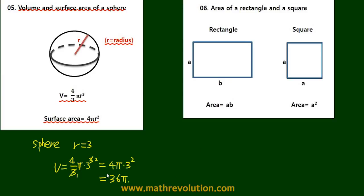Now next, let's look at the area of a rectangle and a square. A rectangle or a square has two sides, a and b, so area becomes a times b, and a square equals a squared.